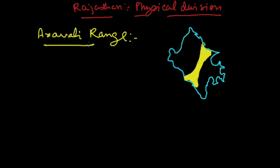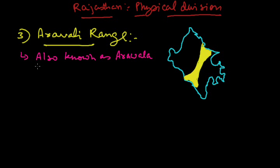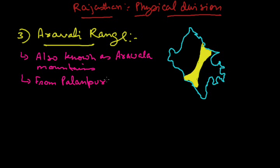The Aravali region of Rajasthan is the third physical feature. This arid region is also known as the Aravali mountains. These Aravali ranges are extended from Palenpur, which is in Gujarat, to the Raisina Hills in Delhi.